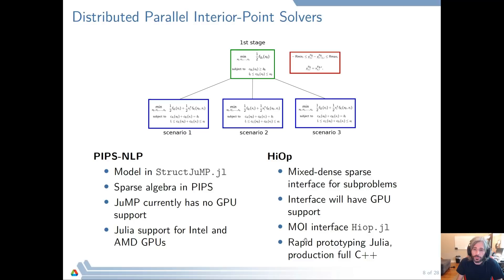Now Julia is only in the high-risk path. For the critical path, we go all C++ and use HIOP as our solver. We have written a Julia interface for HIOP so you can do prototyping in Julia and call HIOP from Julia, but you don't make use of the mixed dense-sparse structure and don't necessarily make use of the GPU.